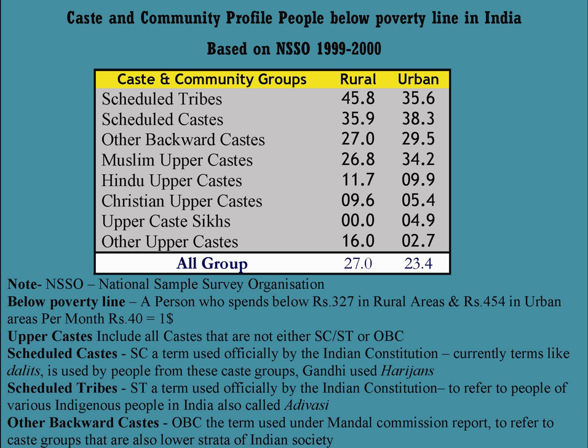The system of reservation in India comprises a series of measures, such as reserving access to seats in the various legislatures, to government jobs, and to enrolment in higher educational institutions. The reservation nourishes the historically disadvantaged castes and tribes, listed as Scheduled Castes and Scheduled Tribes by the Government of India, and also those designated as Other Backward Classes.